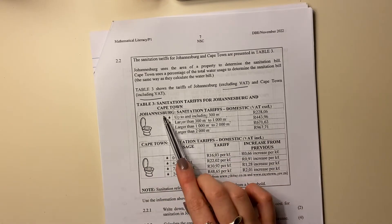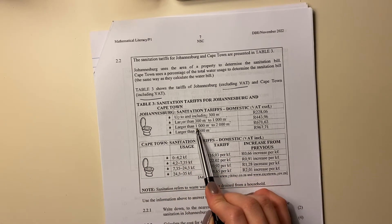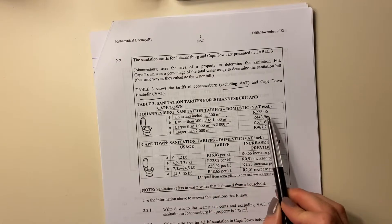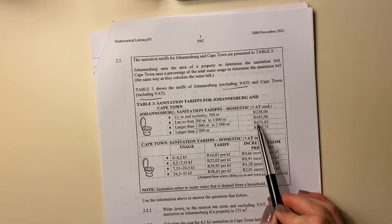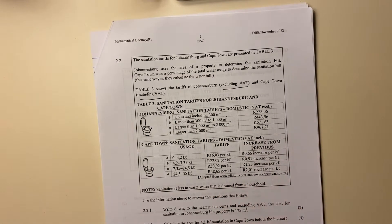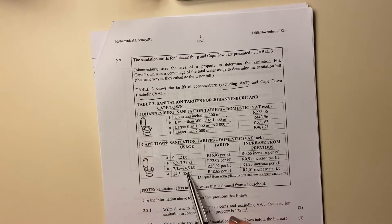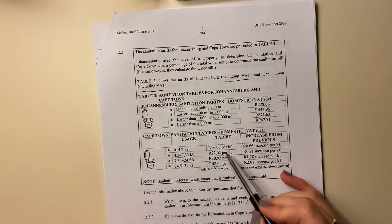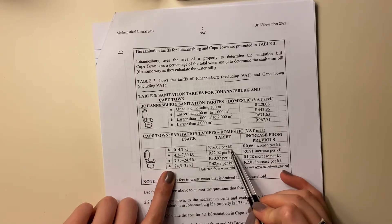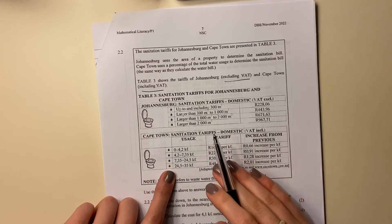So here's the table. You can see Johannesburg, it depends on how big your area of land is. The larger your area of land, the larger your sanitation cost. Then for Cape Town, it says here we have the usage. So it's the amount that you use and then there's the tariff per kiloliter. So this is one of the ones that students tend to struggle with.